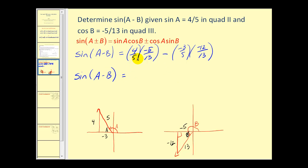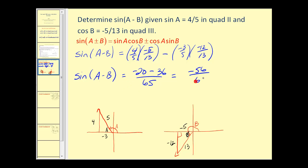Notice we have a common denominator of 5 times 13, or 65. The first numerator is -20, minus this gives us positive 36. So sine(a - b) equals -56/65, and that's our answer for this problem.